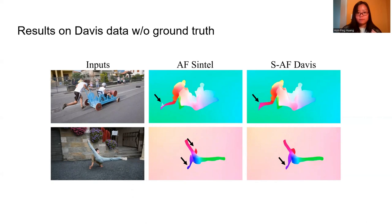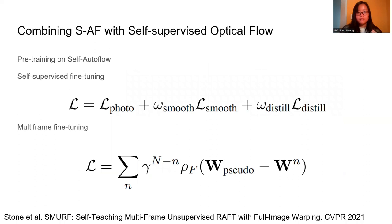To further narrow the domain gap between synthetic data and the target domain, we explore new ways to combine learning to render with self-supervised learning. Self-supervised methods rely on Flying Chairs as a pre-training dataset.